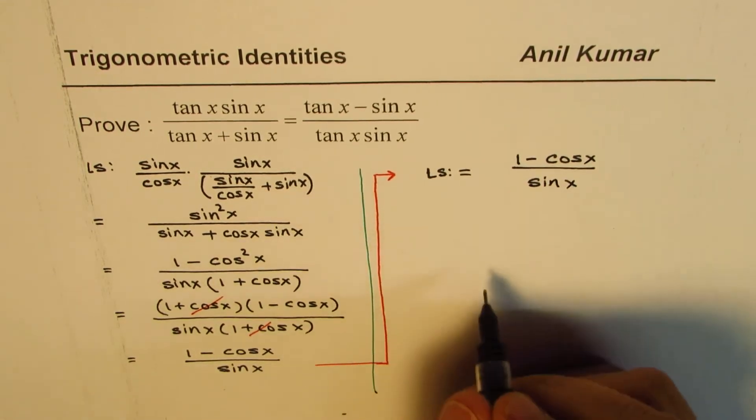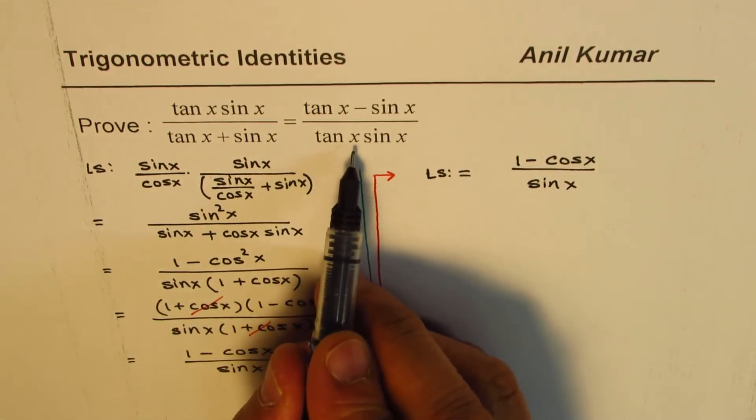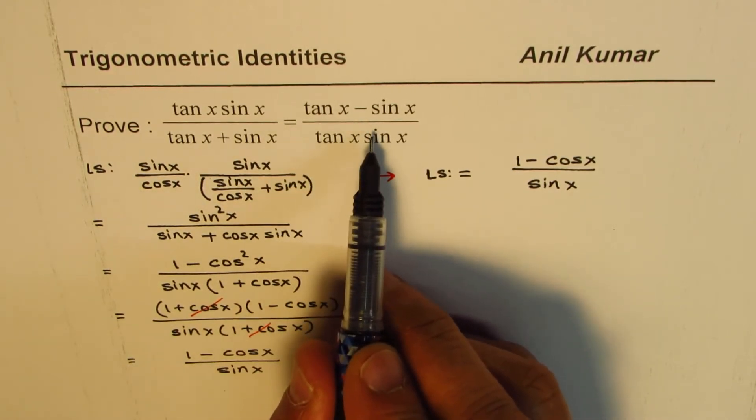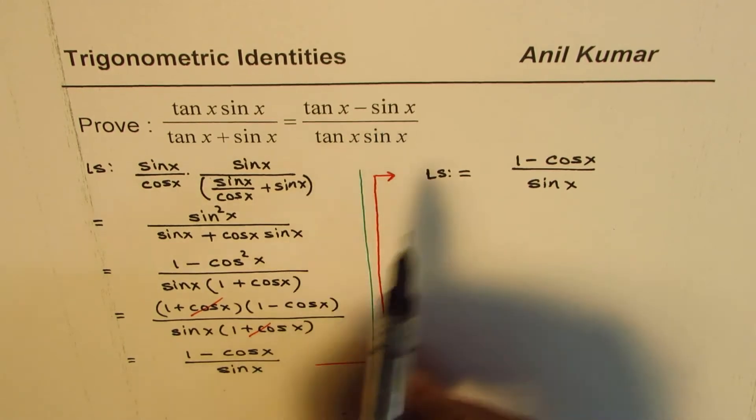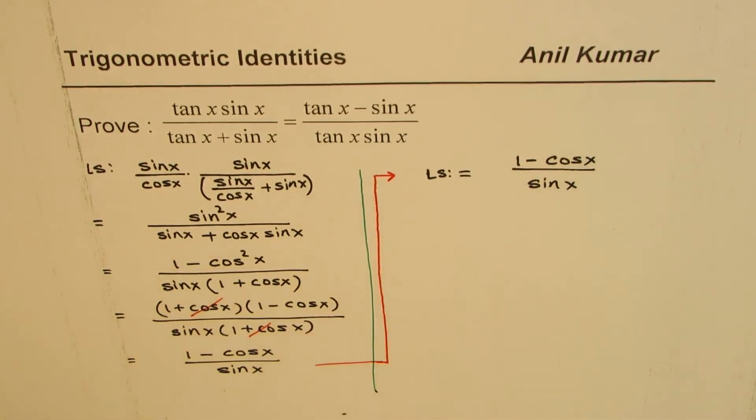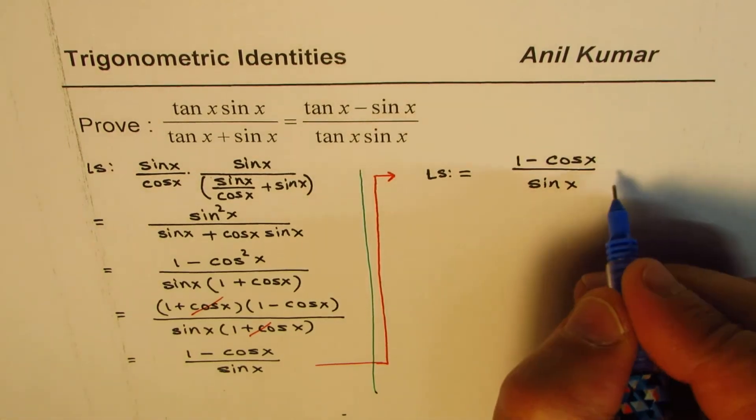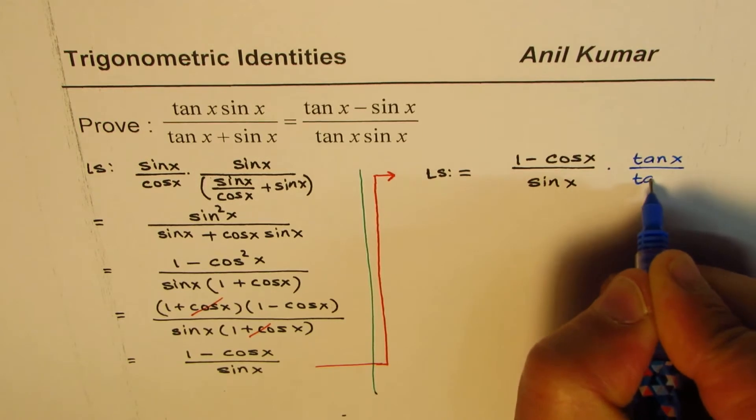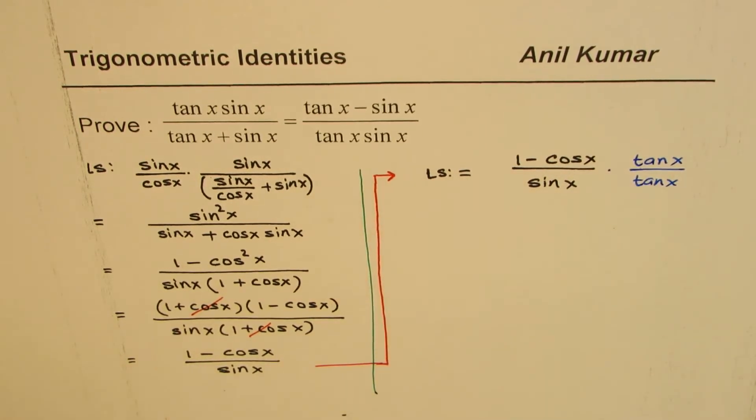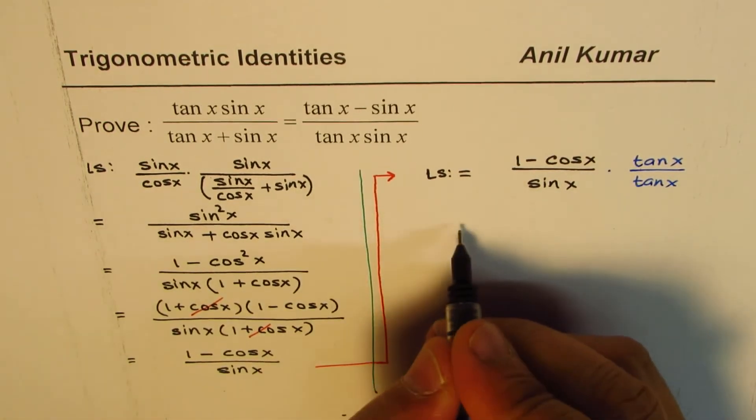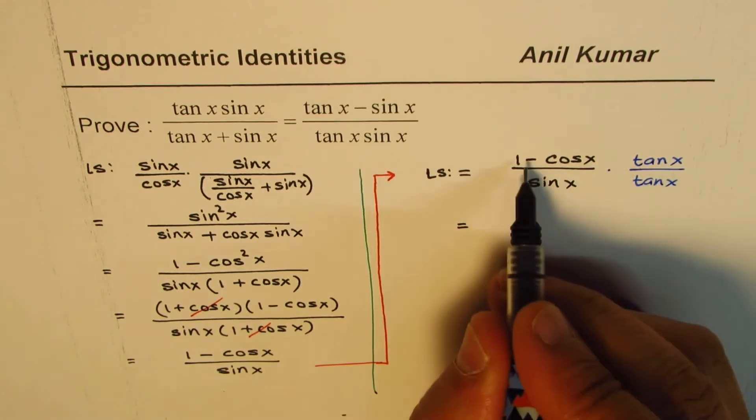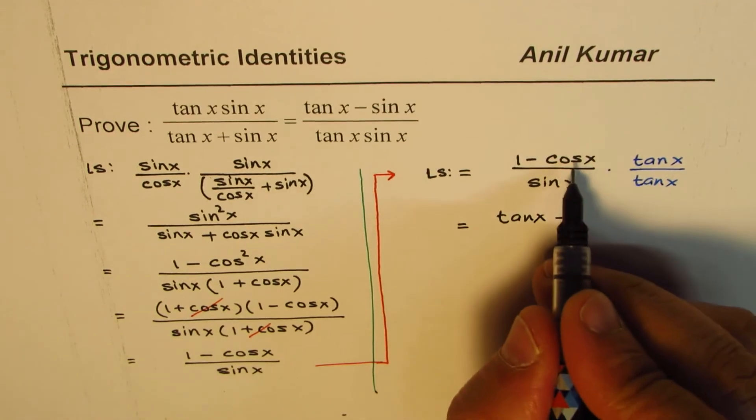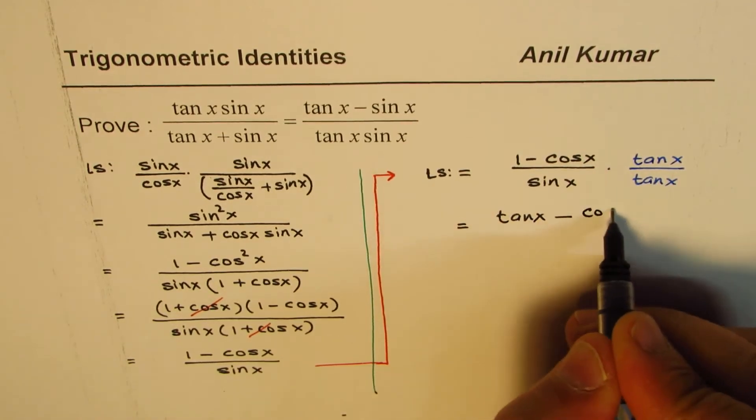The left side for us is equal to 1 minus cos x over sine x. I just copied this. Now this is what we need. The idea is when you start from one side, keep an eye on the other side. What do we need? We need tan x to be incorporated here, so we could multiply and divide by tan x.